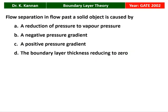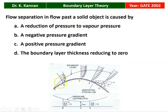The next question from the 2002 question paper: The flow separation in flow past a solid object is caused by (A) a reduction in pressure to vapor pressure, (B) negative pressure gradient, (C) positive pressure gradient, or (D) the boundary layer thickness reducing to zero. Flow separation occurs where the pressure gradient dP/dx is positive, i.e., dP/dx greater than 0. So when dP/dx is greater than 0, there will be flow separation from the solid object.